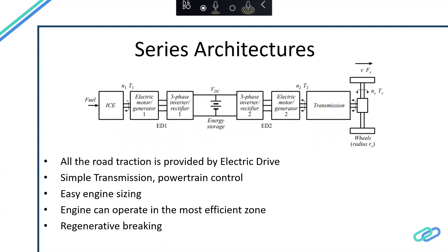Series architecture is basically an electric vehicle with an onboard engine which charges the battery. All the traction is provided by the electric drive. The transmission system here is what provides the traction efforts. Everything on the right side is an electric drive. There's an engine here that charges the battery for the electric drive.